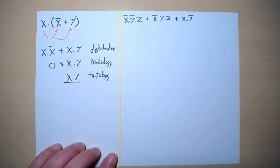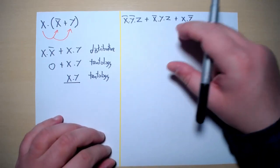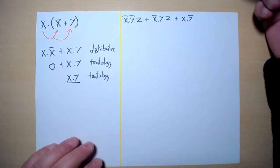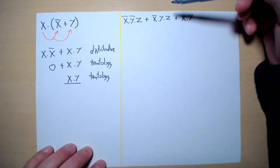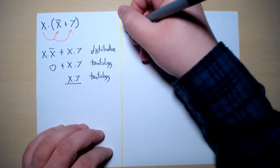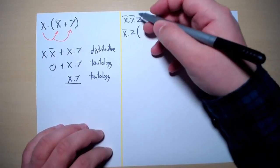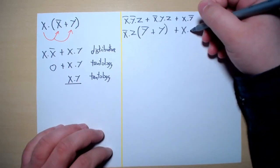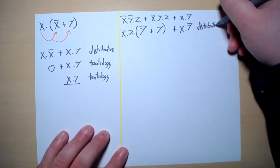Here we have another example. This time we don't have brackets but we have three terms. To simplify these three terms, the best way is to find something common. Here in two of the terms we have X-naught and Z in common, so I am going to take out X-naught and Z and create a bracket: X-naught and Z into Y-naught or Y, or X and Y-naught. Here we have used the distributive law.